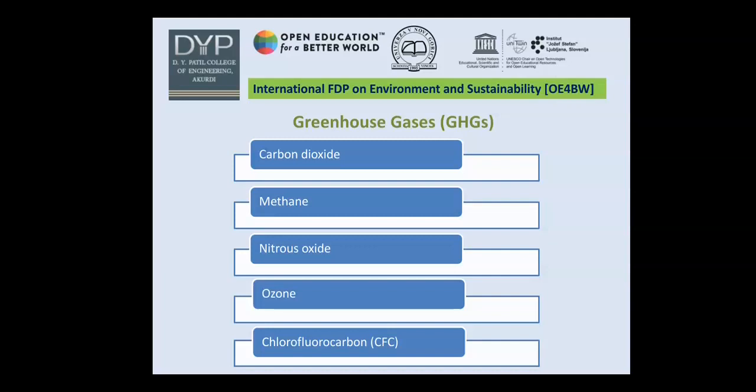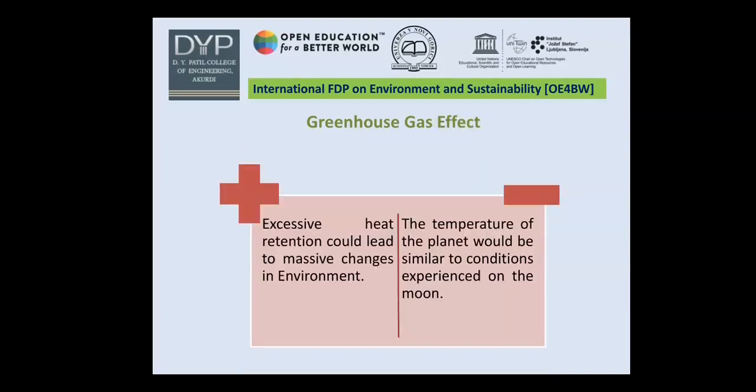The general greenhouse gases include carbon dioxide, methane, nitrous oxide, ozone, and chlorofluorocarbons. The greenhouse effect — excessive heat retention — could lead to massive changes in the environment, and the temperature of the planet would become similar to conditions expressed from the Moon.